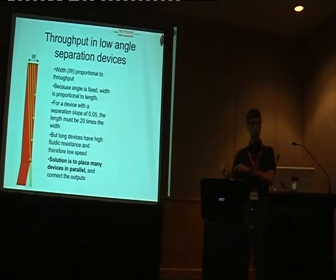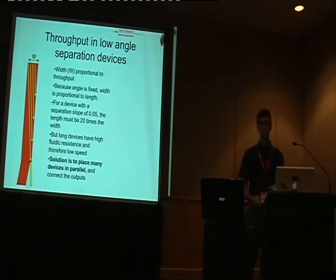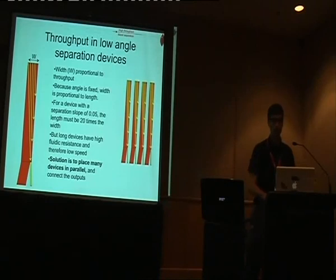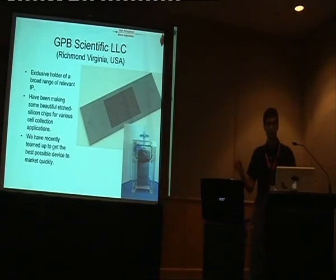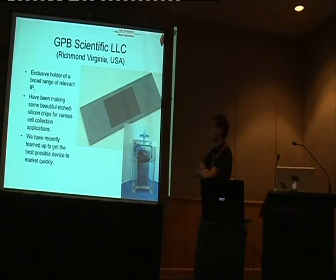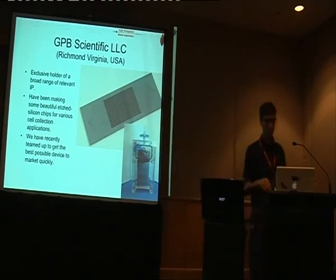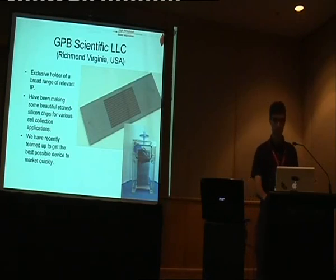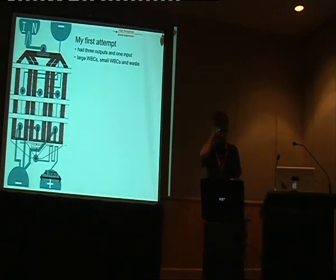Whichever approach you use, the common challenge is throughput — we need milliliters per minute for anyone to care. These devices use low separation angles so they're going to be really long. Throughput is proportional to width, and the wider it is the longer it is, so the only way around that is to run many in parallel — which creates challenges connecting inputs and outputs across multiple levels. The company we've started working with, GPB Scientific, owns the IP so you can't really go ahead without them. They've been good to work with — contributing to grant writing. Their current chip is about this big, sits in a cartridge, and you put blood through it to get white blood cells out, though they have room for engineering improvement, which is what I'm helping them do now.